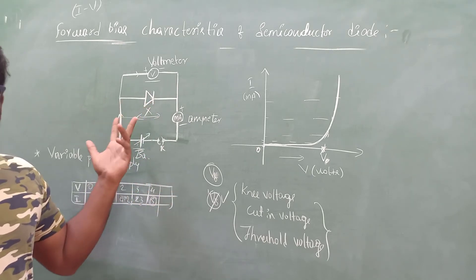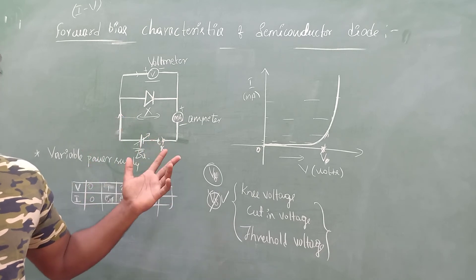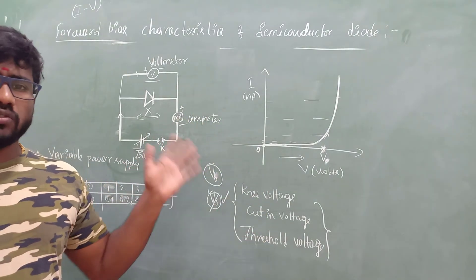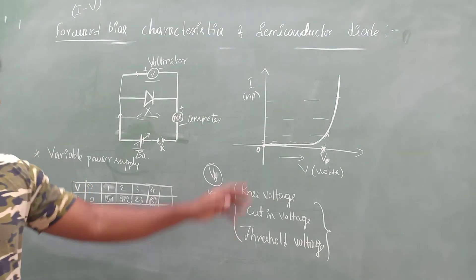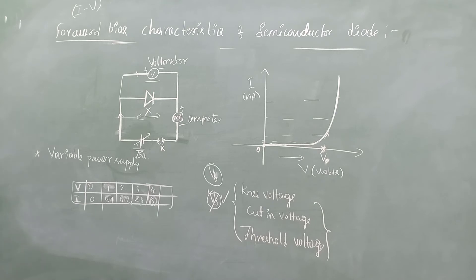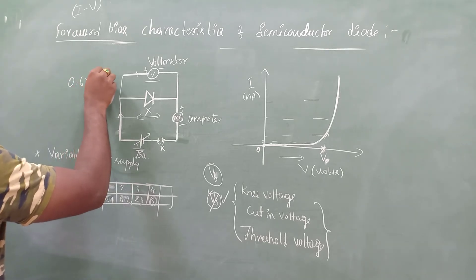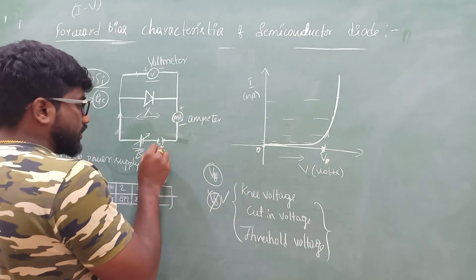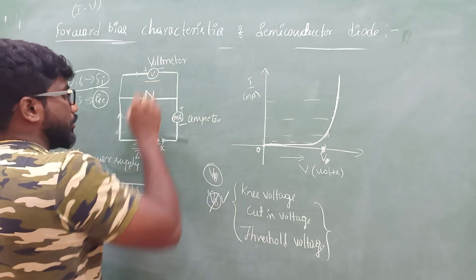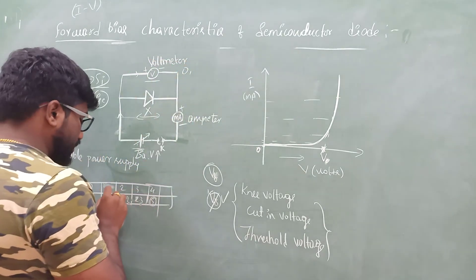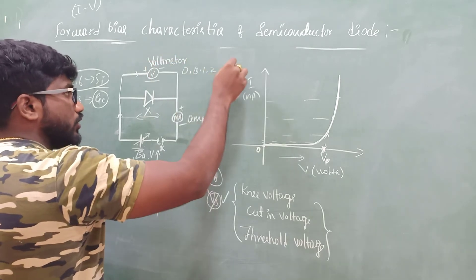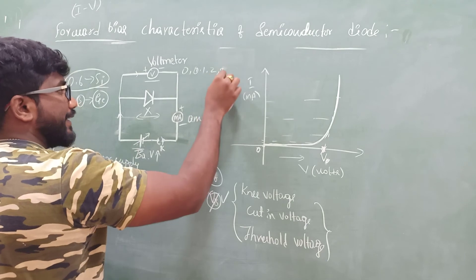The voltage at which conduction begins is called the cut-in voltage, knee voltage, or threshold voltage. For a given semiconductor diode the barrier potential is fixed, and for different semiconductor diodes the barrier potential is different. If the diode wants to conduct it has to cross over that limit. For silicon, the barrier potential or cutting voltage is 0.6 volt, and for germanium it is 0.3 volt.